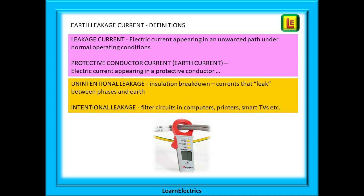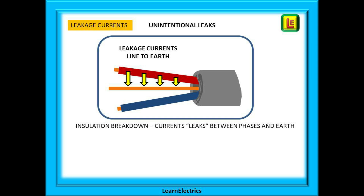Unintentional leakage is current that leaks between phase and earth due to insulation breakdown — leakage we do not want to happen. No insulating material is a perfect insulator and they all degrade and break down over time. This is one reason we carry out insulation resistance tests and often see a drop in value with older installations. Electric current will gradually leak from the phase to earth and into any metalwork in contact with the cables; the longer the cable, the worse the problem.